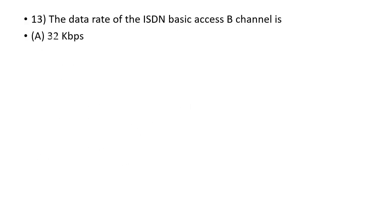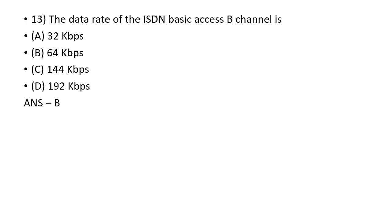The data rate of the ISDN basic access B channel is dash. The ISDN basic access B channel data rate is 64 Kbps.